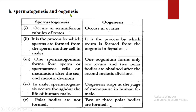Differentiate between spermatogenesis and oogenesis. Spermatogenesis is the formation of sperm cells, and oogenesis means the formation of the ovum. Spermatogenesis occurs in the seminiferous tubules of the testes — the male gonads. In case of females, oogenesis — the formation of ovum — takes place in the pair of ovaries. Sperms are formed from sperm mother cells, and the ovum is formed from the oogonia in the female.